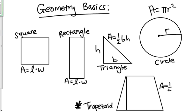And then the area of a trapezoid is one half times the height, parentheses, base one plus base two.